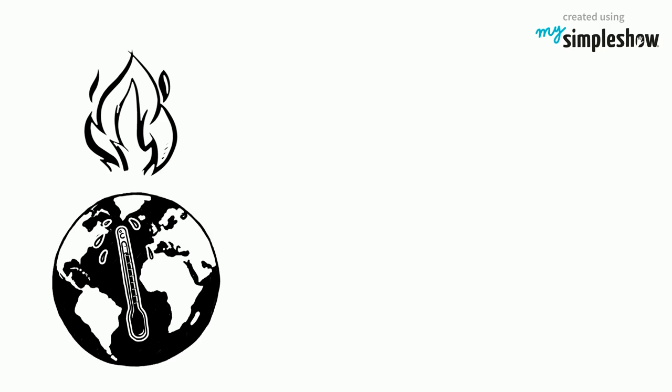Greenhouse gases trap heat in the atmosphere and make the planet hotter. In fact, they are formed in many ways. Producing electricity and raising cattle also adds to the high levels of greenhouse gases in the atmosphere. This increased heat can have negative effects on vegetation and natural disasters.